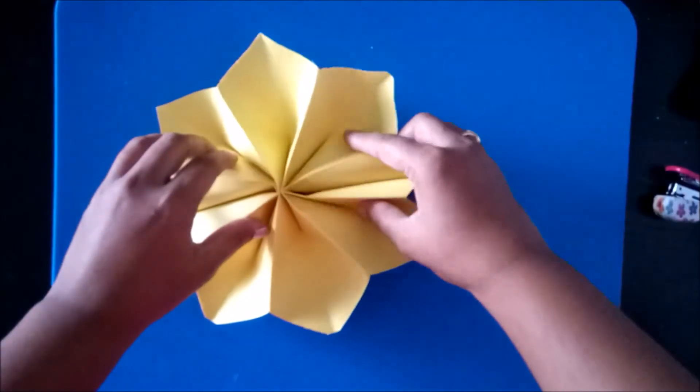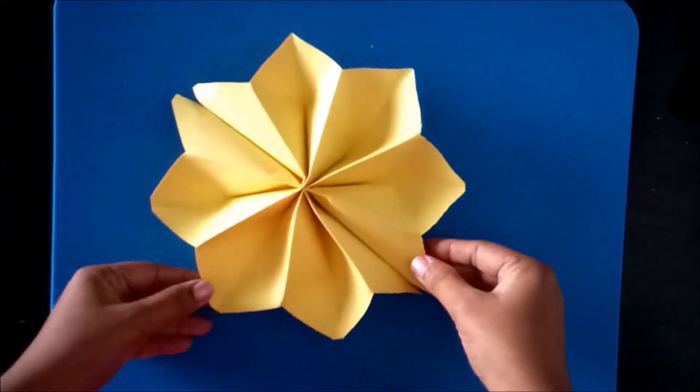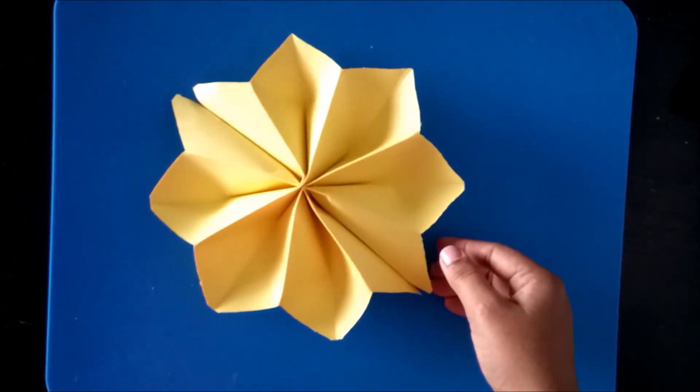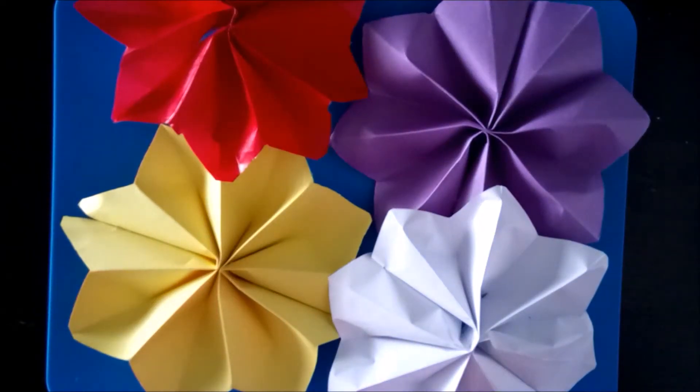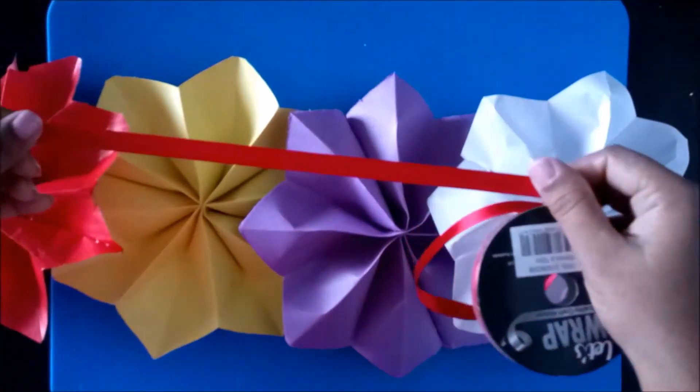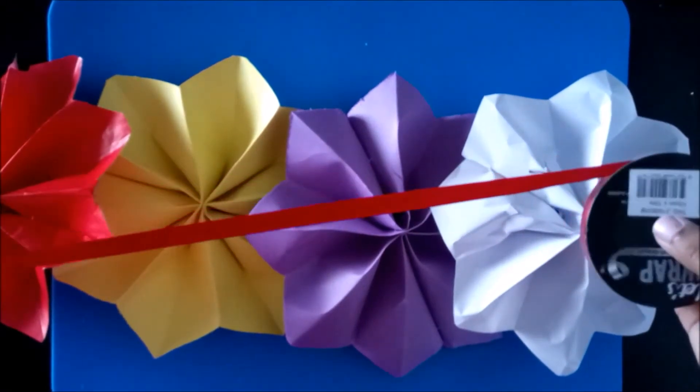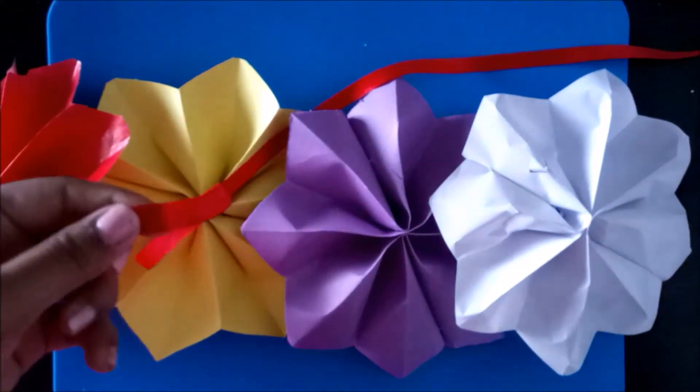And that's it, you get this easy star-shaped wall hanging decoration. Make a small hole and use a ribbon or thread to tie all the stars up and hang in your wall.